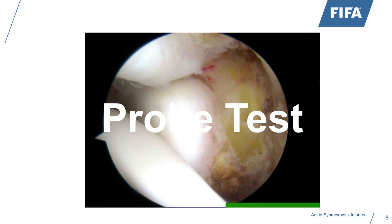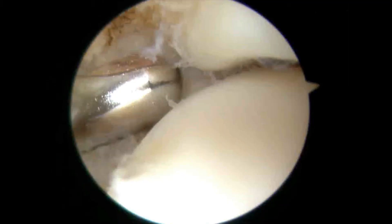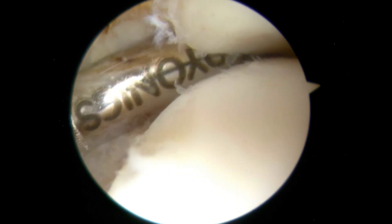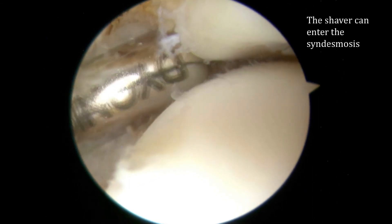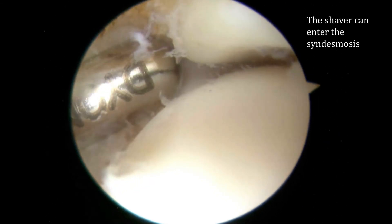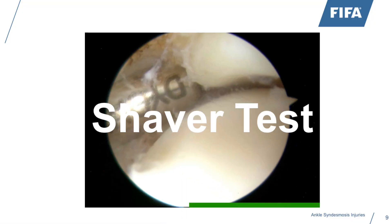You can also do it with what we call a shaver — a 5.0 tool used in surgery. If you can put it into the distal syndesmosis, it means it's just too widened. It might sound strange that it's hard to identify instability even during surgery, but with these tests it can really help you in identifying instability.